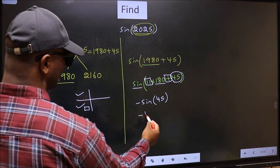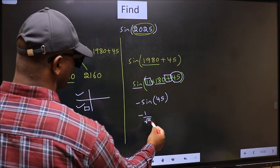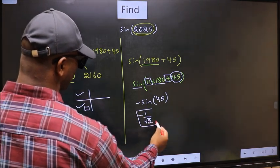So negative sine 45 is 1 over root 2. This is our answer.